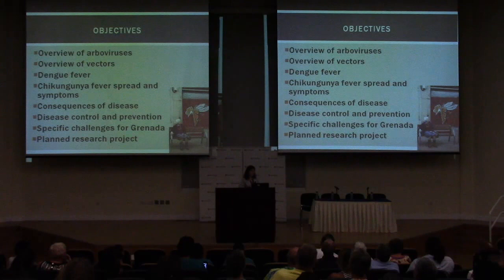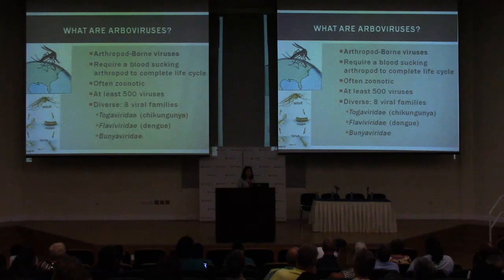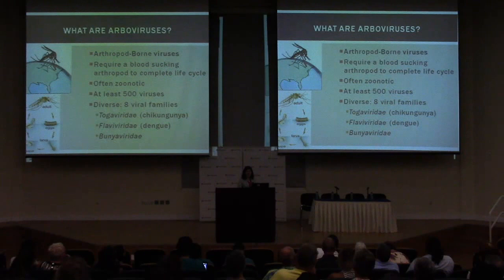First, what are arboviruses? Arbovirus stands for arthropod-borne virus — these are viruses that require a blood-sucking arthropod to complete their life cycle. Many of these infections infect both animals and human populations, so we call them zoonotic. We know of at least 500 viruses across eight viral families, but three in particular cause most human disease: the Togaviridae, the Flaviviridae, and the Bunyaviridae. Chikungunya is a togavirus and dengue is a flavivirus.